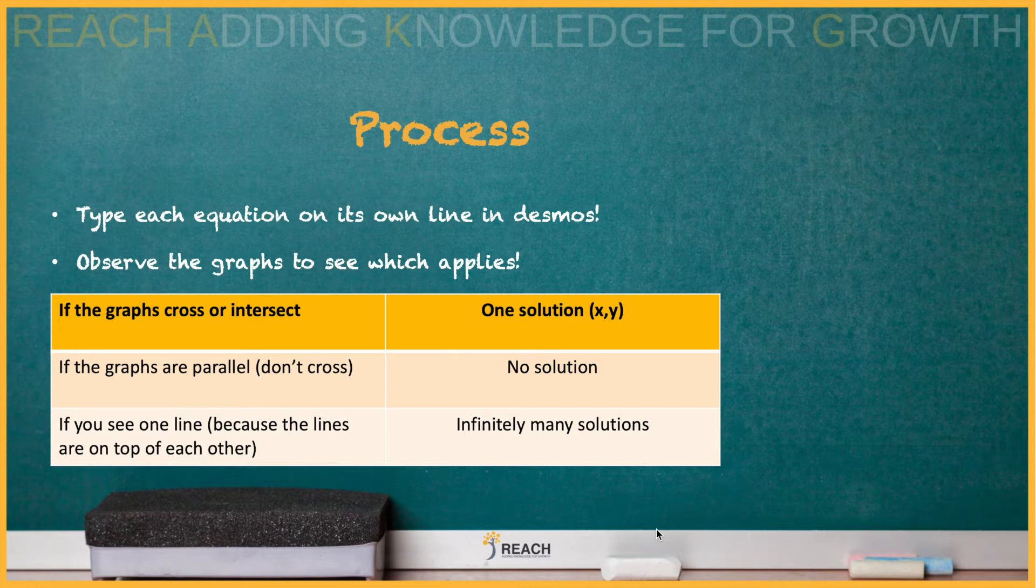Let's look at the chart. If the graphs cross, it's going to be one solution, a coordinate point. If the graphs are parallel, no solution. And if you see one line, it's going to be infinitely many solutions.